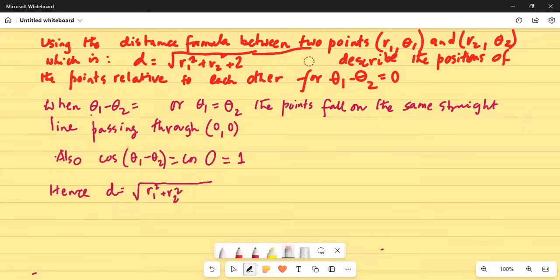So this is 2 r1 r2 cosine theta1 minus theta2.